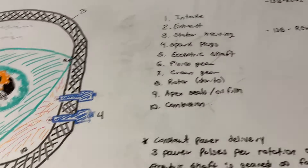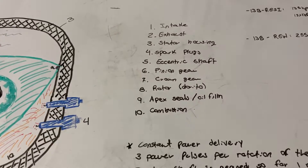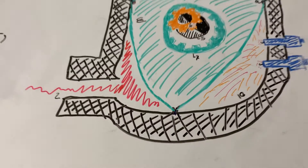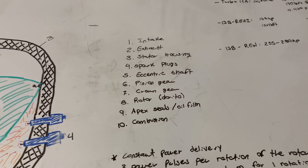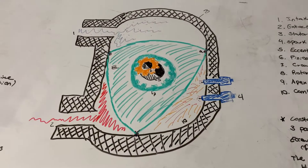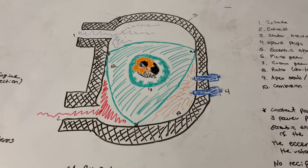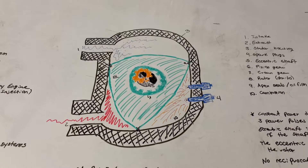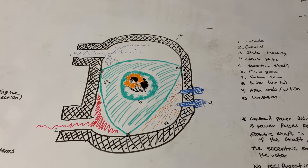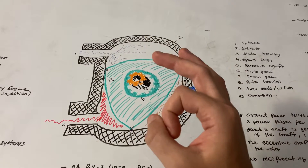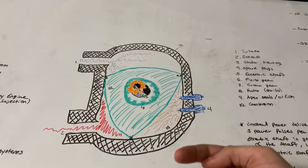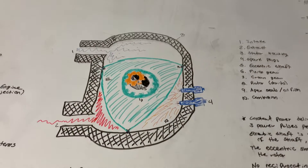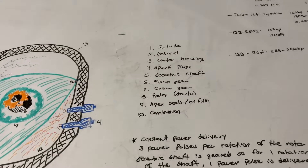Number two right here is your exhaust port — that'll be your exhaust chamber. Number three is your stator housing, or just the housing. The stator housing is any housing that contains a part that's spinning. So if you have a turbo with the impeller spinning, the housing that covers the impeller is called the stator or stator housing.